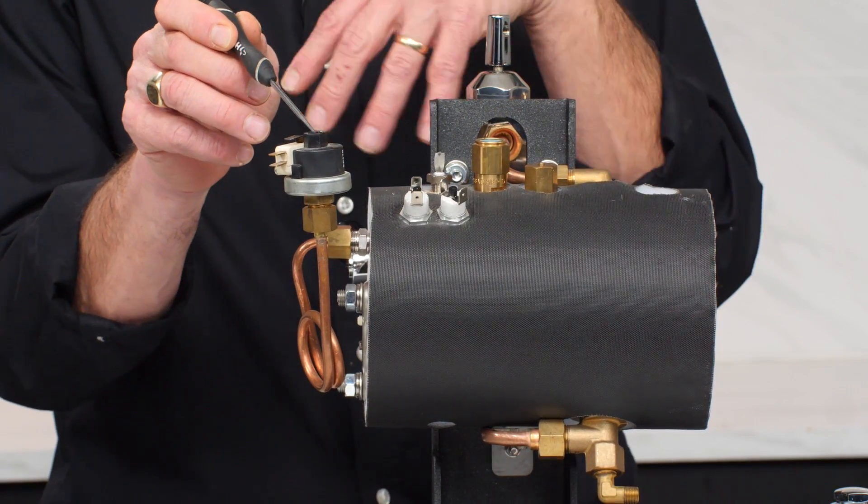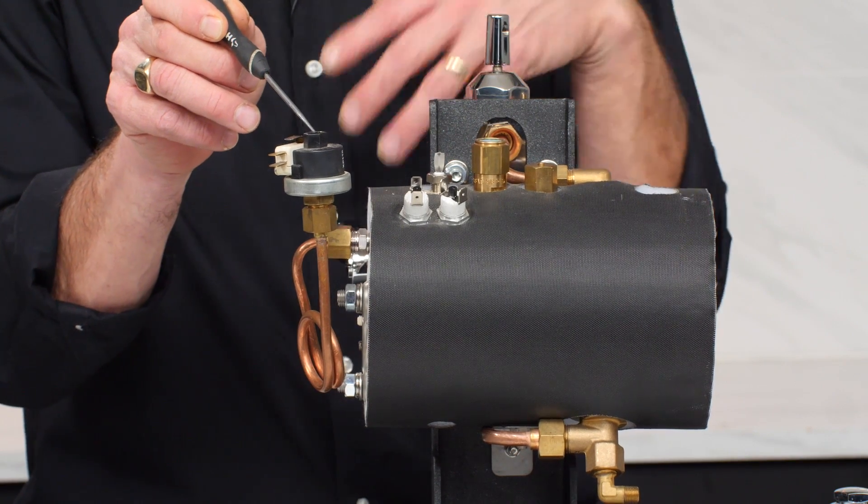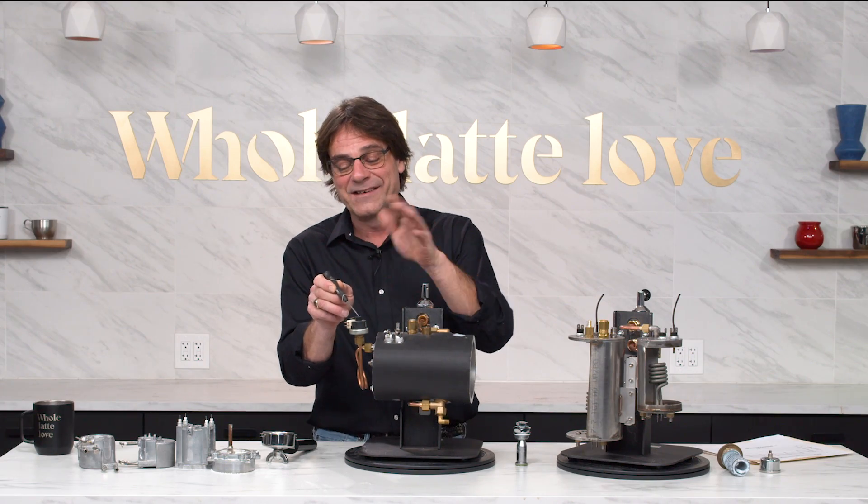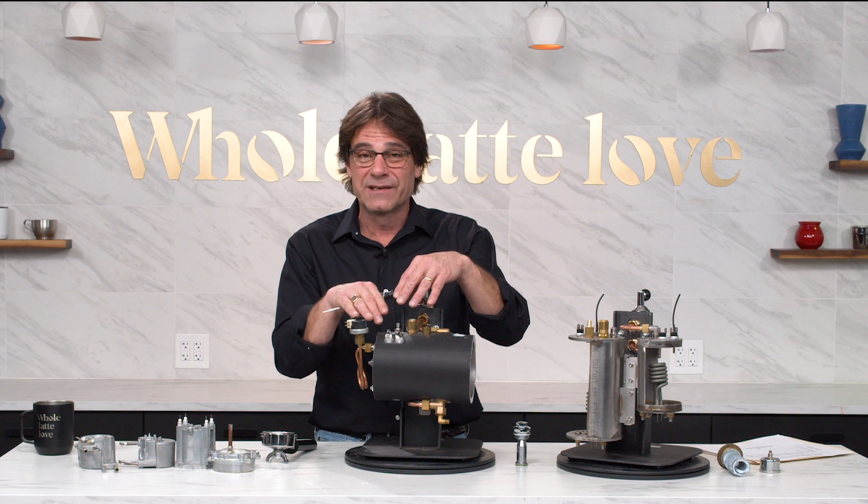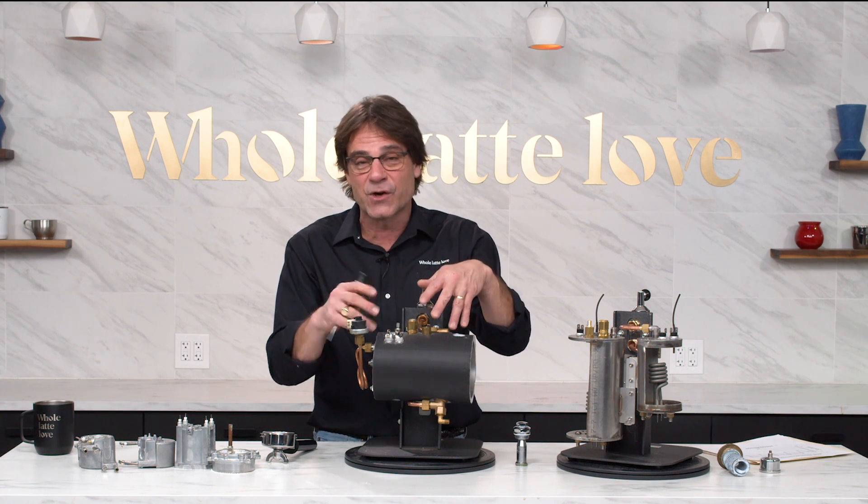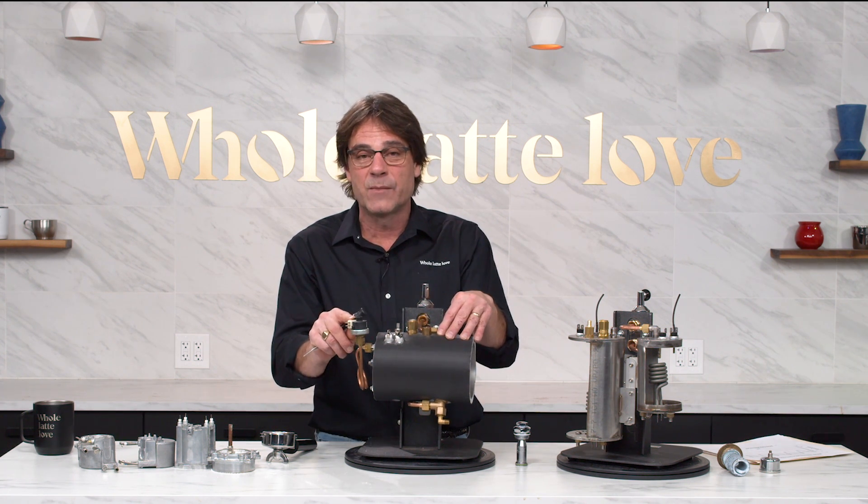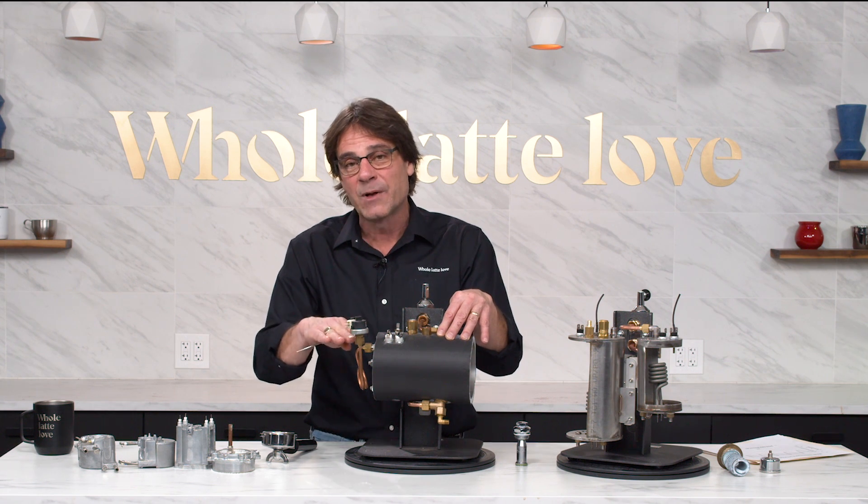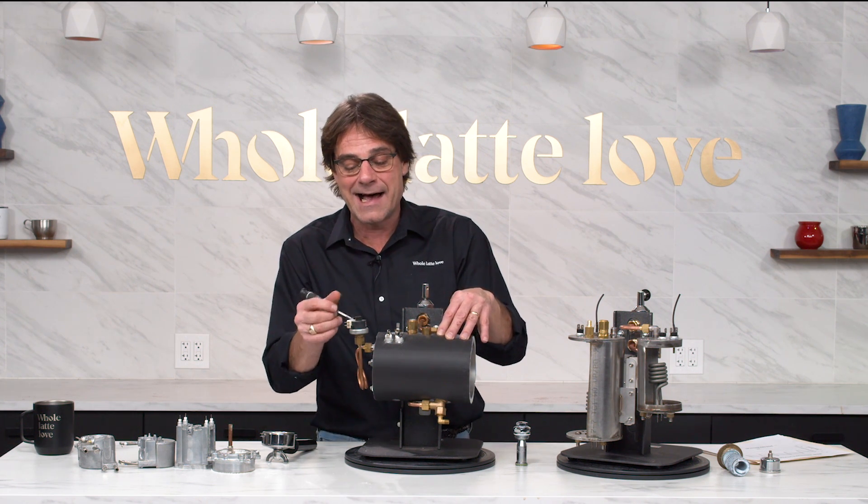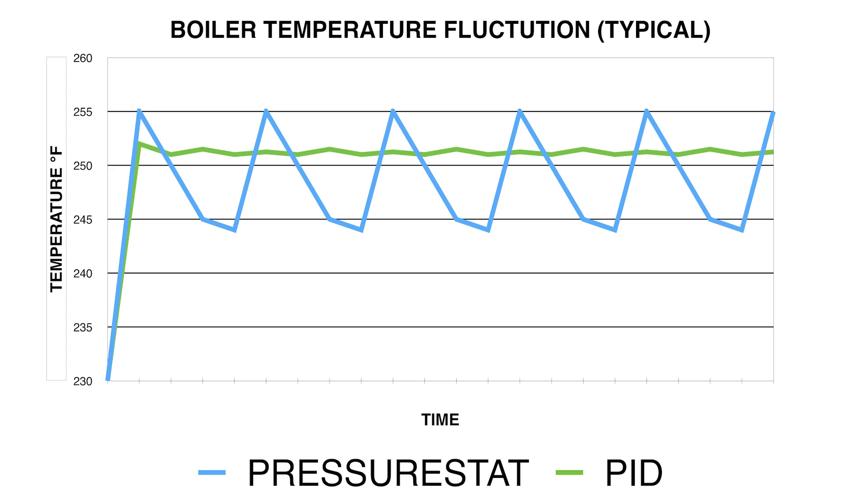This is a pressure stat. In this boiler it's just measuring the pressure that's inside the boiler, and that is going to be connected to the heating element and tell the boiler when to heat and when to not heat. So the boiler reaches a certain pressure which relates to a temperature. When it reaches that pressure, it kicks the element off, then the pressure is going to drop, then the element's going to kick back on.